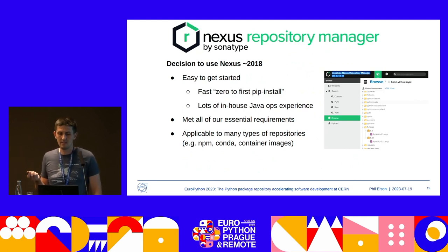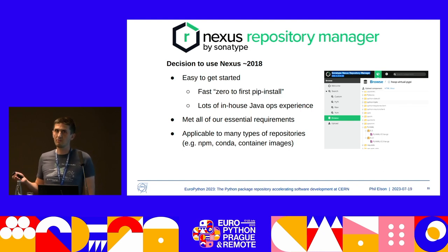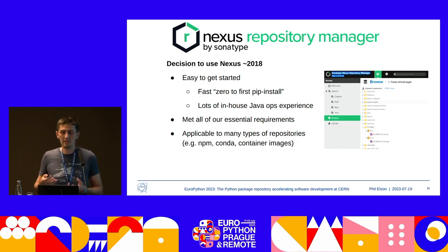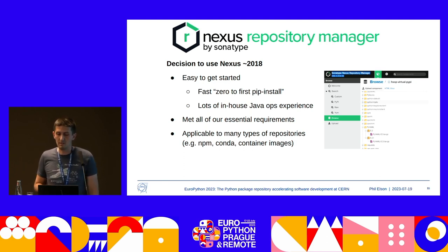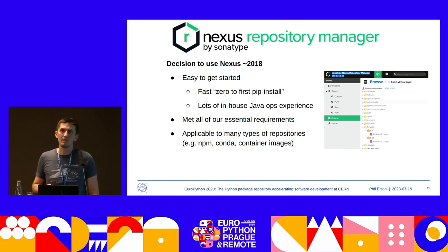A little bit of history. Back in 2018, some colleagues of mine installed Nexus — Sonatype Nexus. It was a very easy experience; it went from zero to first pip install very quickly. It was advantageous that Nexus is developed in Java, and my colleagues have extensive in-house Java operations experience, so the two things aligned nicely. Ultimately, this tool met all of our essential requirements. It had the added advantage that it was applicable to other types of package repositories — Conda, containers, or NPM.